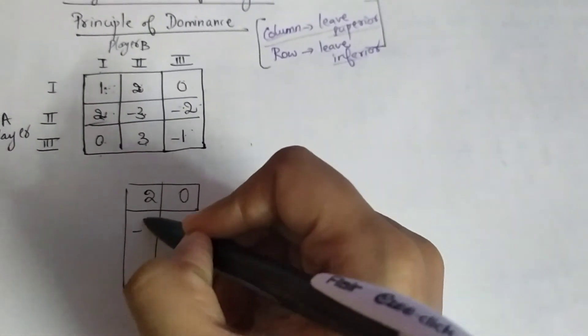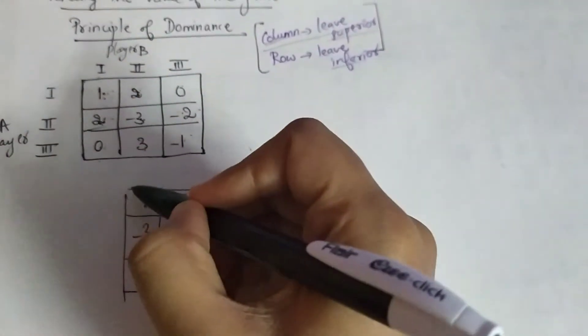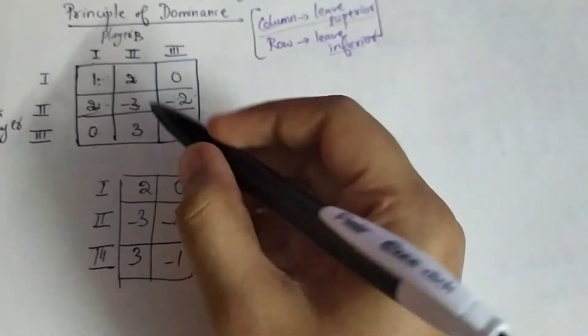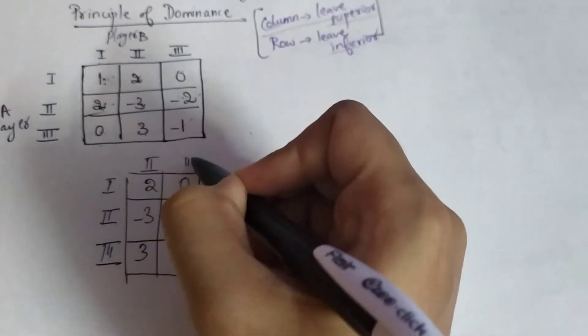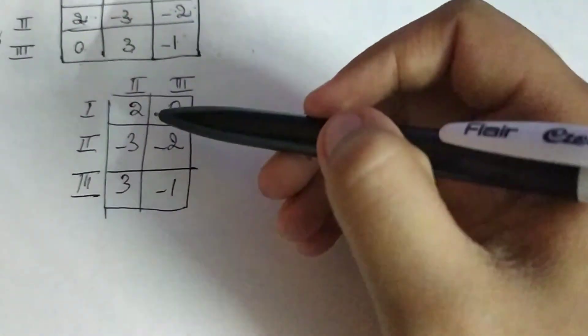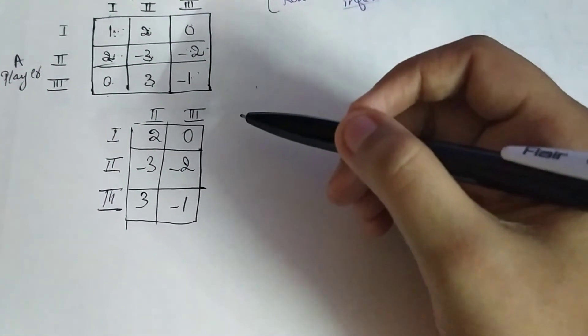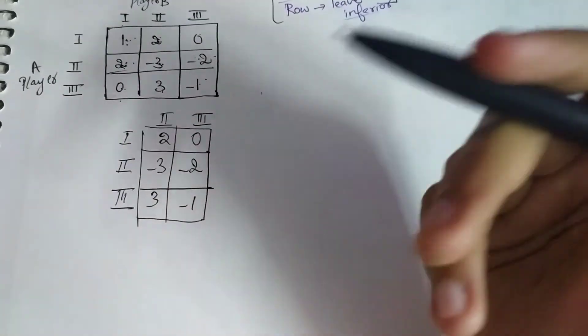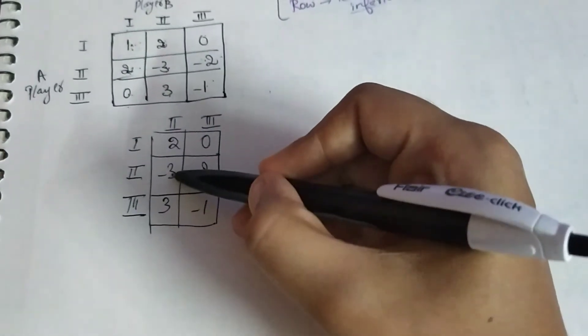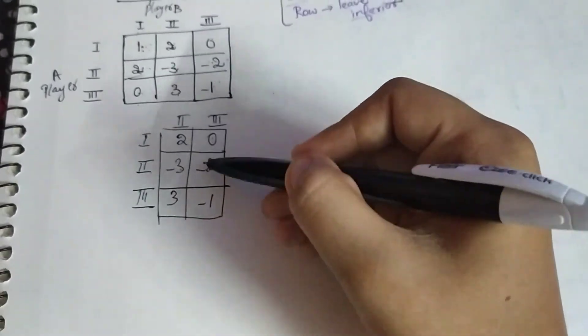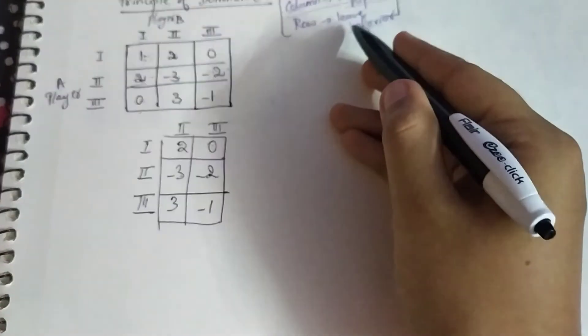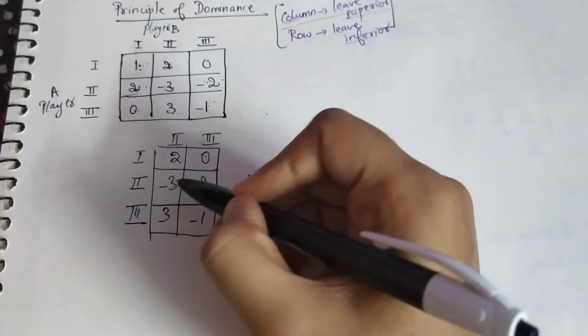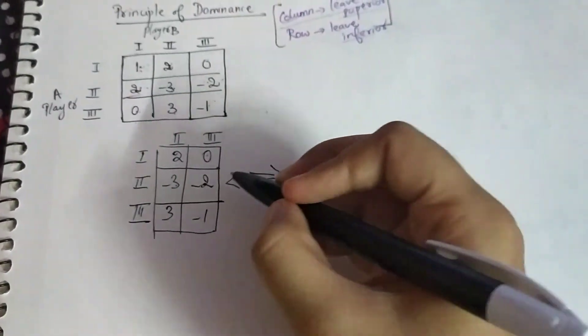After removing column one, you are left with columns two and three: two, zero, minus three, minus two, and three, minus one. You now have rows one, two, and three remaining. Start the comparison again — you can do rows or columns in any order, but it is better to complete rows first, then columns. Comparing rows two and three: two is greater than minus three, and zero is greater than minus two — both are satisfying. In rows, you leave out the inferior one, which is the row with minus three and minus two.